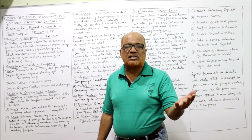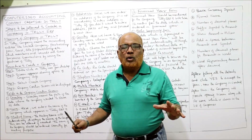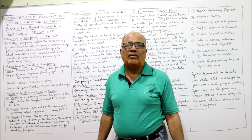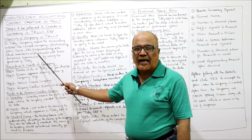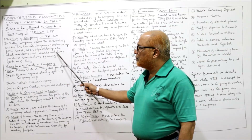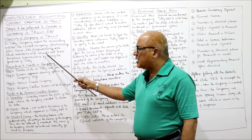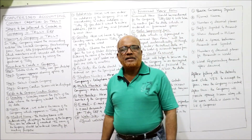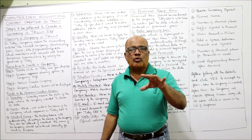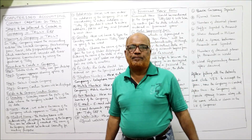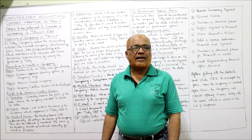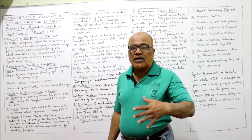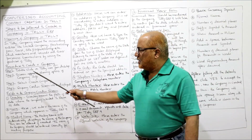Whether it is a sole tradership, a partnership, a trust, or a limited company — every entity whose accounts are to be maintained and recorded is treated as a company in Tally ERP 9. So any entity that maintains and records all business transactions using Tally's features is called a company. Now let's discuss the procedure to create a company, step by step.